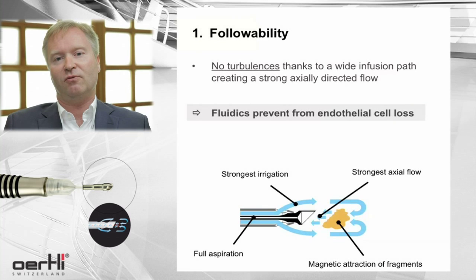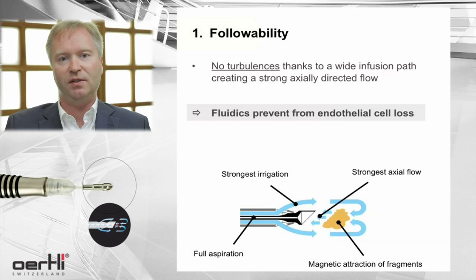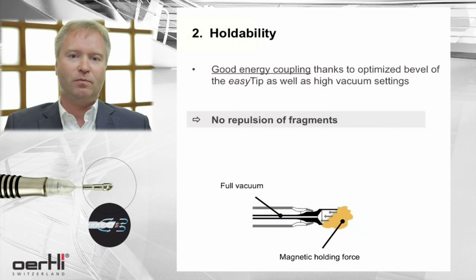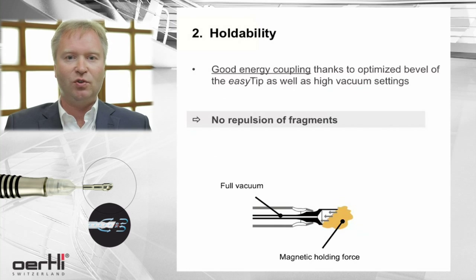Followability is so important because you don't want to have turbulence in the eye and in the anterior chamber. This is especially important as you want to save the corneal endothelium from being damaged during surgery. The holdability is important because you want to have a good energy coupling, so you do not want to have repulsion of the fragments from the FACO tip.